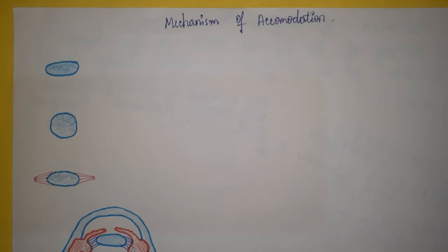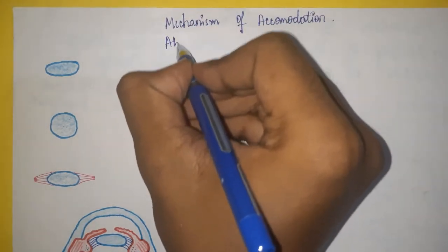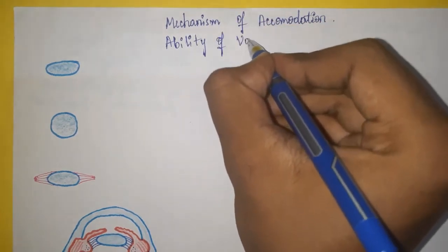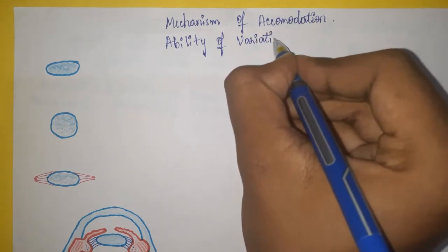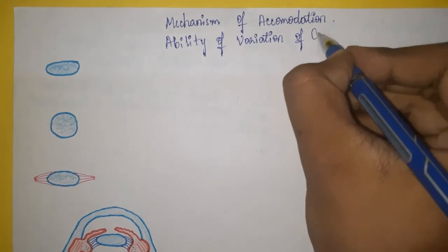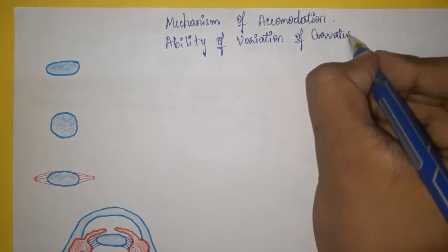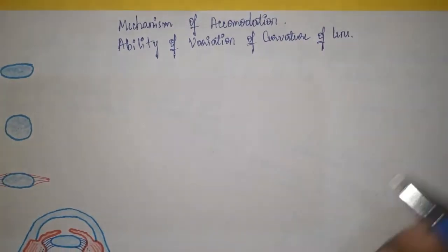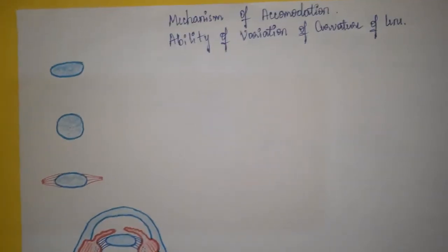Before the mechanism, you should know the definition of accommodation. Accommodation is the ability of the eye by which it can change or vary the curvature of the lens so as to focus the object clearly.